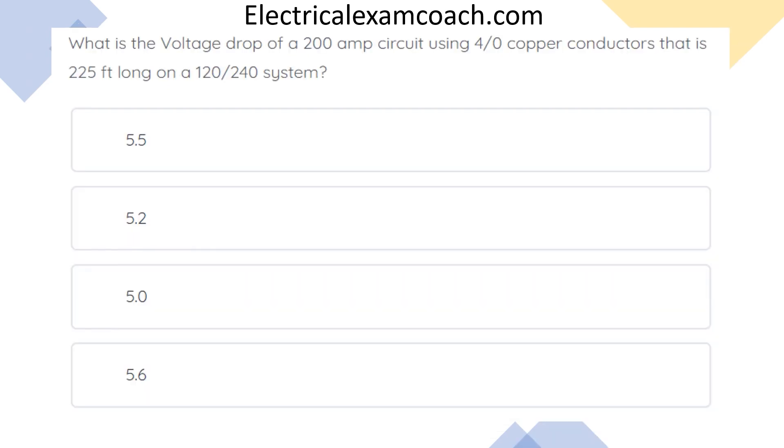What is the voltage drop of a 200 amp circuit using 4-aught copper conductors that is 225 feet long on a 120-240 volt system? And the correct answer is A, 5.5.